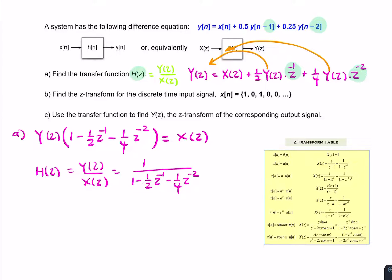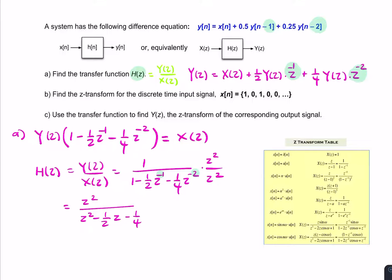If we want, we can simplify by multiplying numerator and denominator by z² over z², just to get rid of the negative powers of z. That gives z² divided by (z² minus one-half z minus one-quarter), which is equivalent but slightly nicer looking without negative powers of z. That is the transfer function H(z).